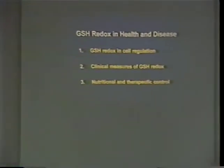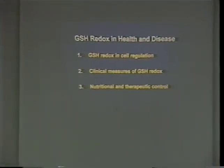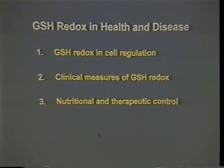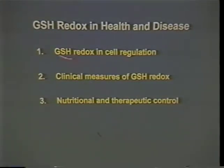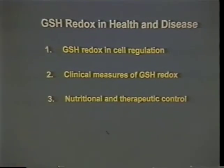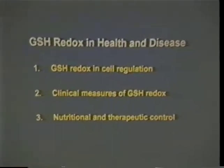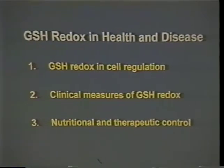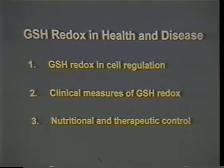The talk is organized into two aspects. I'm not going to talk much about nutritional and therapeutic control - I decided that since the main discussion was NAC, that aspect is fairly evident. I'm going to talk mainly about the meaning of redox as we've deduced from our studies, principally on glutathione redox in cells, cell culture, and some animal studies, and then using glutathione redox as a clinical measure of oxidative stress.